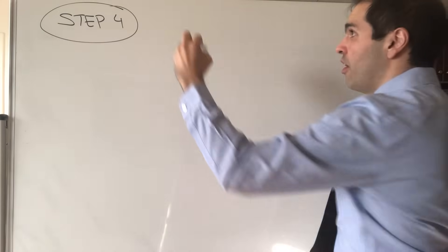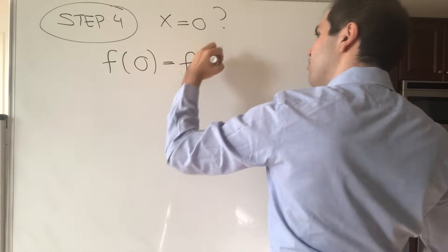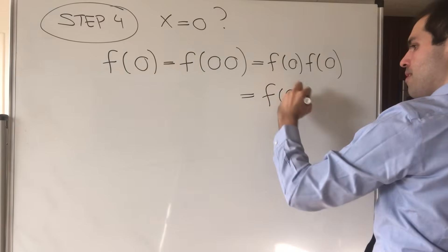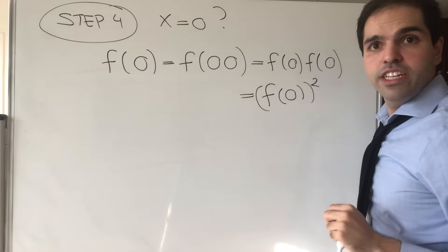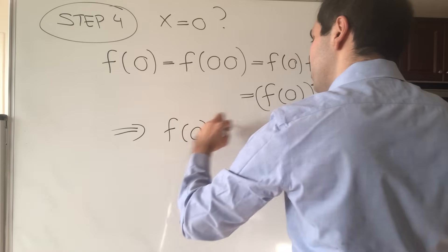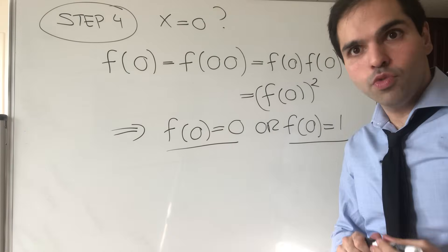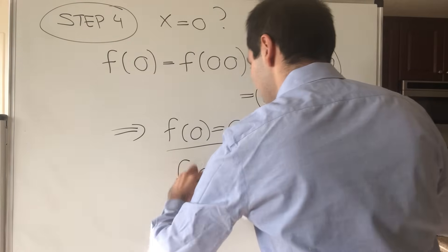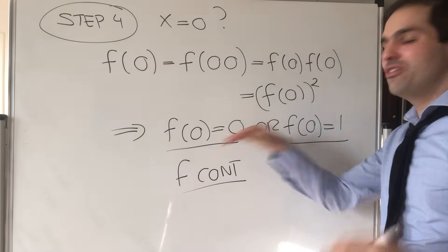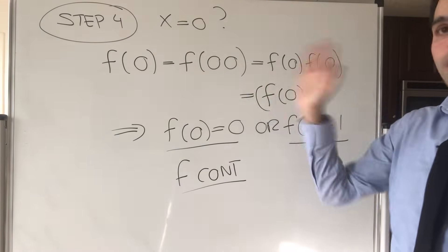Now let's tackle the case x equals 0. We use the identity: f(0) equals f(0·0) equals f(0) times f(0), so f(0) squared equals f(0). This means f(0) satisfies x² = x, giving two possibilities: either f(0) equals 0, or f(0) equals 1. Both are valid — you just pick whichever one makes f continuous. For example if f(x) equals x, you choose 0; if f is the constant function 1, you choose 1.